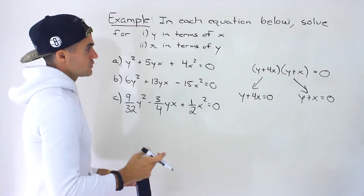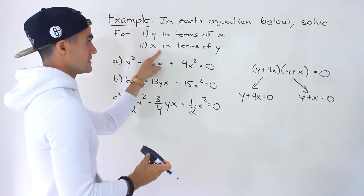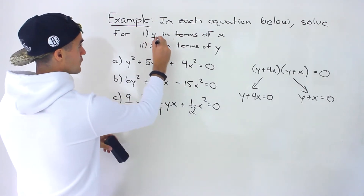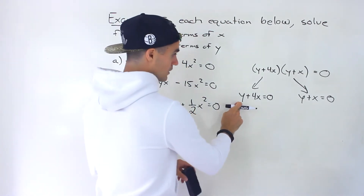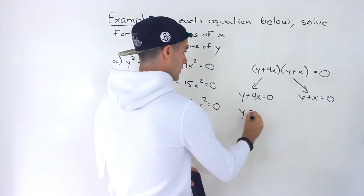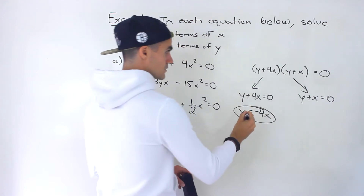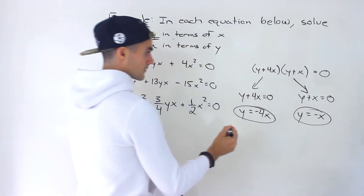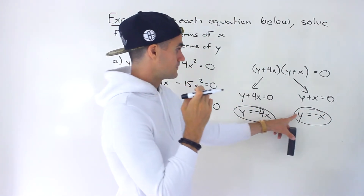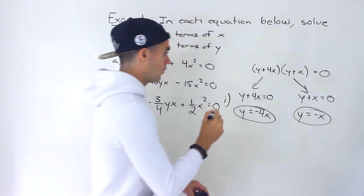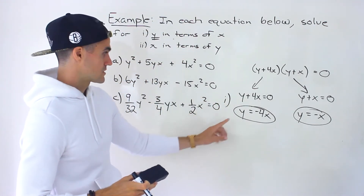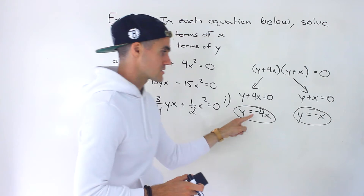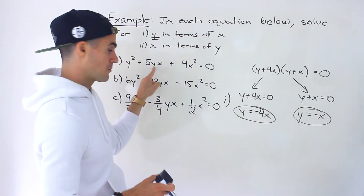There are two different ways to write the solutions. First, we can write y in terms of x — meaning we isolate for y in each factor. For y plus 4x equals 0, the y is already by itself, so we bring 4x over and get y equals negative 4x. That's one solution. For y plus x equals 0, the y is by itself, so we bring x over and get y equals negative x. So the two solutions for y in terms of x are y equals negative 4x and y equals negative x. That's one set of solutions for part a.